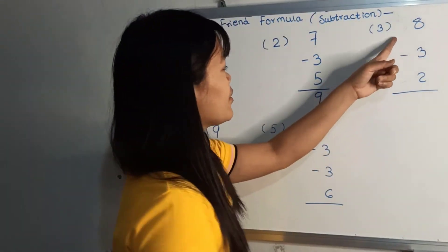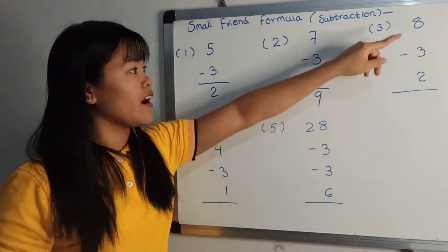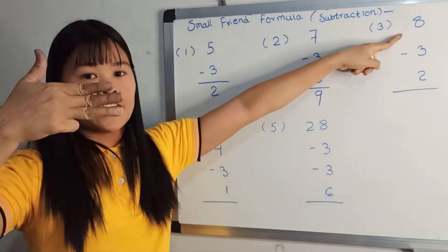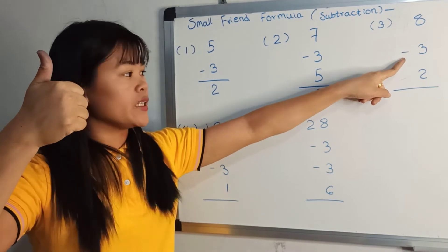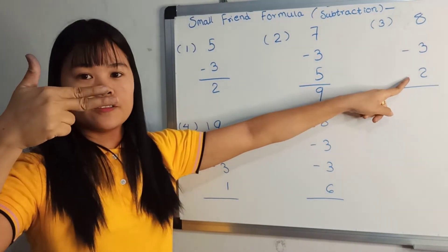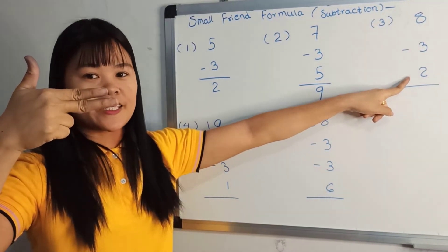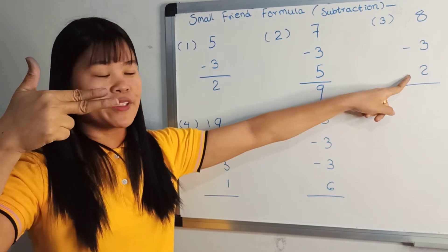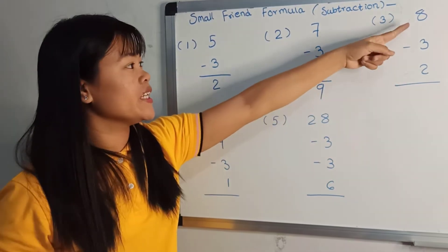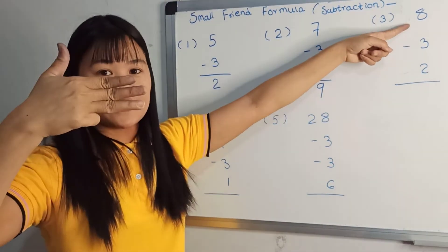Now, under the temperature of 1 menu: 8, minus 3, plus 2, answer 7. That's why you want to make a formula. How do you want to make a formula? 8.